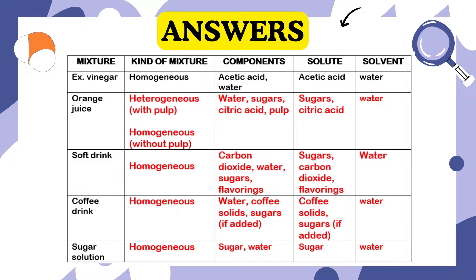Here are the correct answers. One: orange juice — kind of mixture: heterogeneous with pulp, homogeneous without pulp. Components: water, sugars, citric acid, pulp. Solute: sugars, citric acid. Solvent: water. Two: soft drink — kind of mixture: homogeneous.